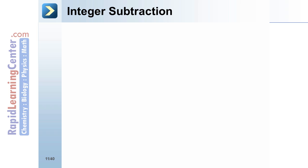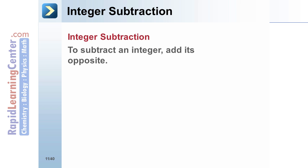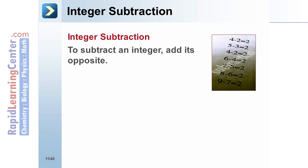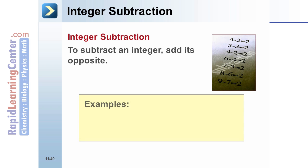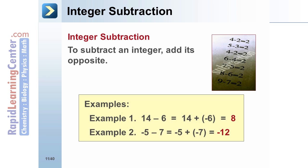Integer Subtraction: To subtract an integer, add its opposite. Example 1: 14 minus 6 is the same as 14 plus negative 6. Both equal positive 8. Example 2: Negative 5 minus 7 is the same as negative 5 plus negative 7. Both expressions equal negative 12.